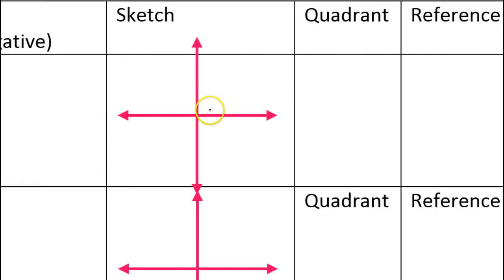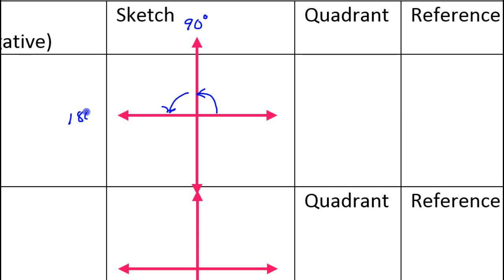For years, we have known about degrees. We've known that this is a 90-degree angle, and if we came around to here, this was 180 degrees. If we came to this position, we were talking about 270 degrees, and if we went all the way around, that was 360 degrees.